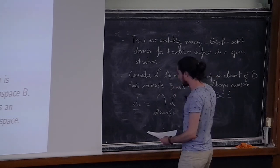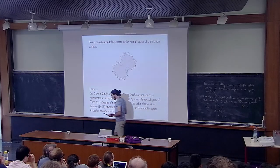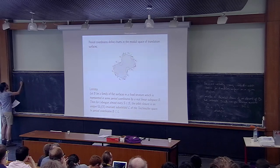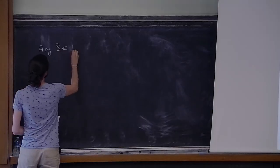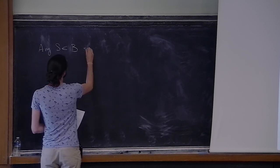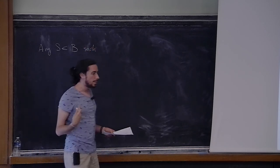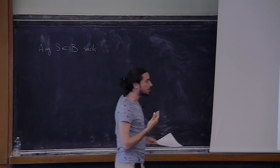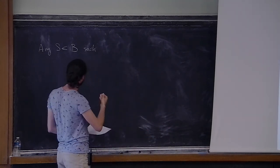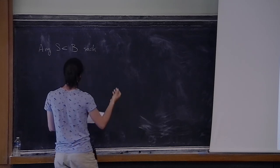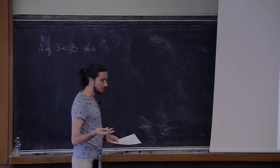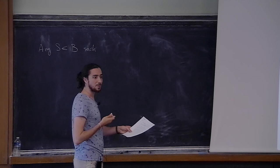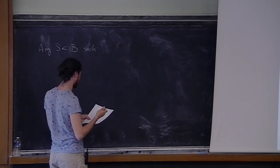We are almost done. For any surface in B whose orbit closure is not equal to lambda zero, the Lebesgue measure of the intersection with B is zero. There are only countably many such orbit closures, so we can remove this measure-zero set. Therefore for almost every surface in B, the orbit closure equals lambda zero, which is the whole stratum.